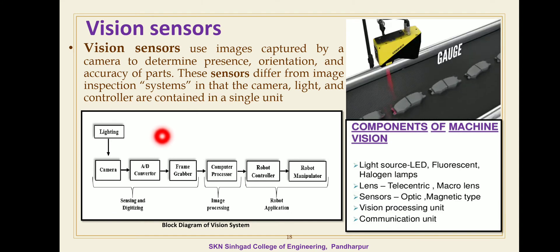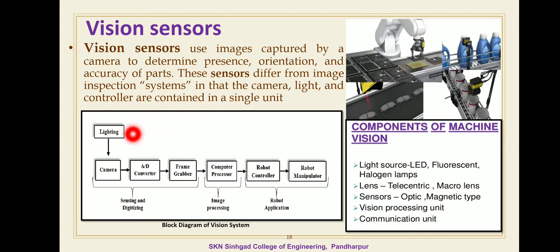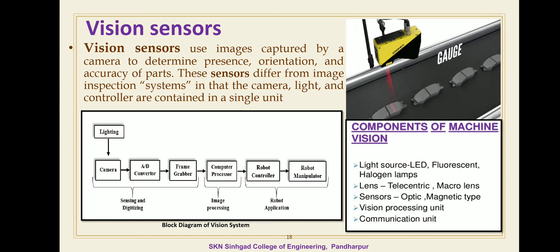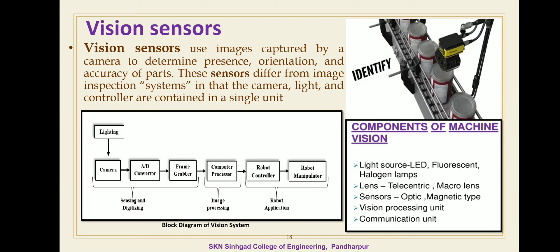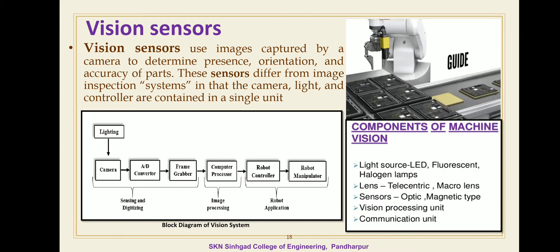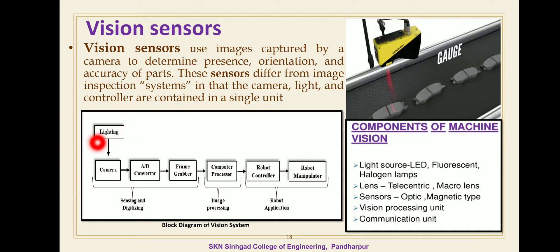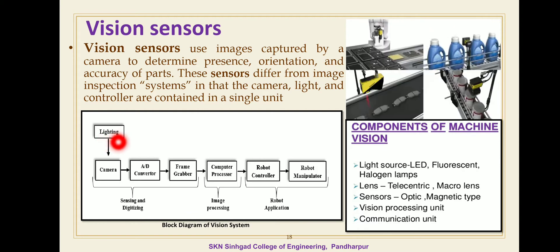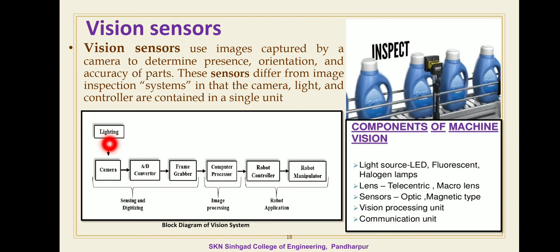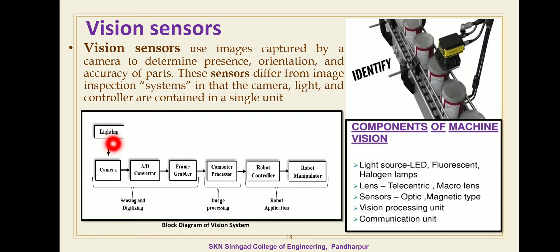This figure shows the systematic arrangement of the robotic vision sensor. The first basic component is lighting. The basic function of lighting is to provide sufficient contrast as well as brightness for capturing the image. There are two types of illumination techniques used in vision sensors: front light source and back light source.